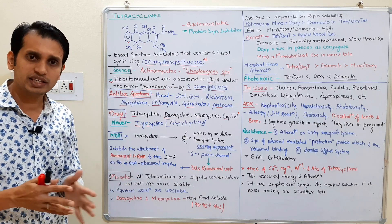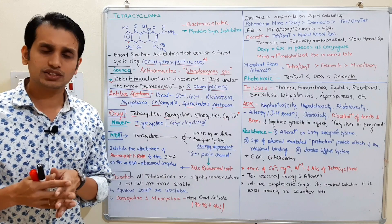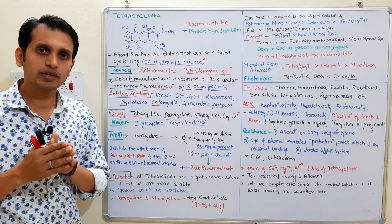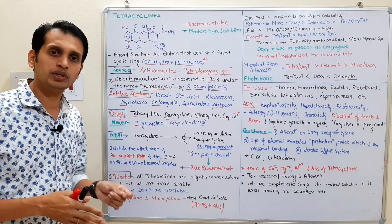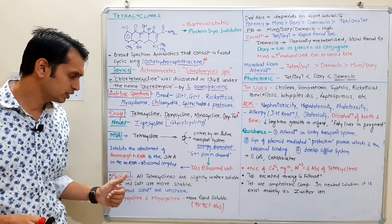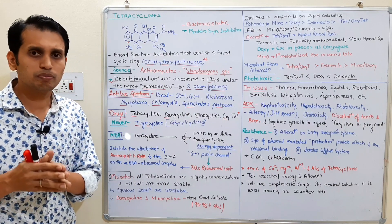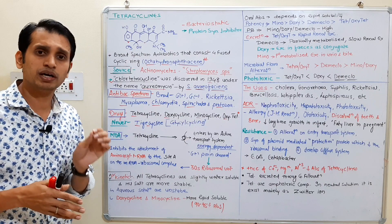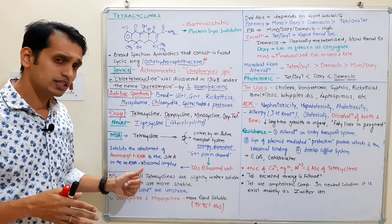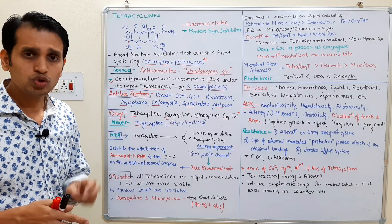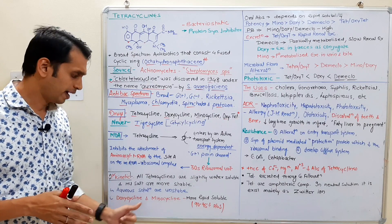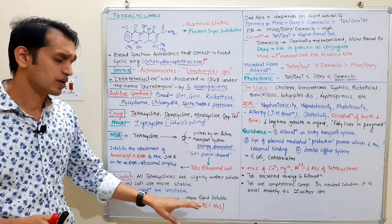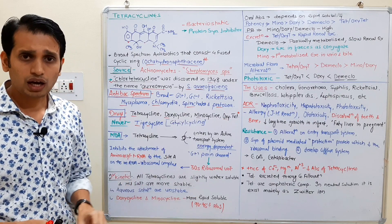Regarding the pharmacokinetic profile of tetracyclines: all these drugs are poorly or slightly water-soluble. The HCl salt — hydrochloric acid salt — is more stable than the parent drug. Bacterial absorption depends on lipid solubility. Doxycycline and minocycline are more lipid-soluble than the other tetracyclines; therefore they absorb better, with 90 to 95 percent oral absorption.